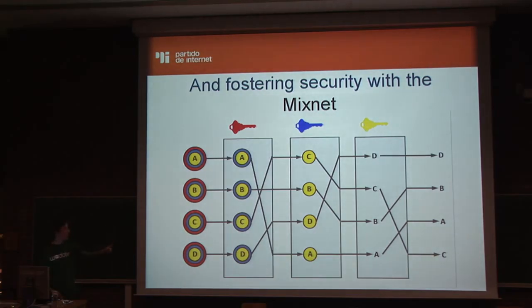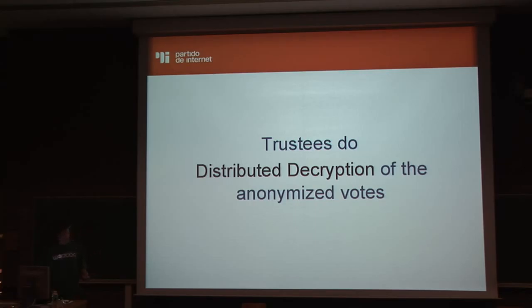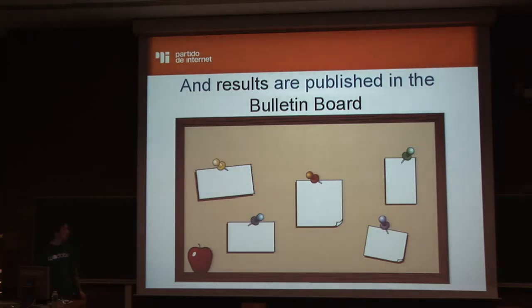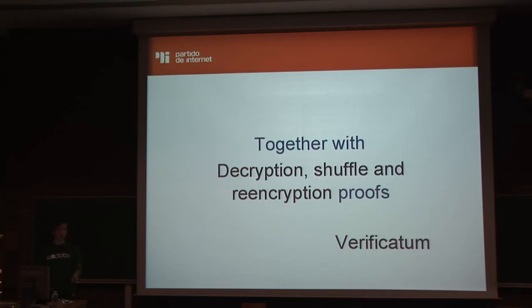Each trustee does this process collaboratively. When we have a list of ballots that are shuffled and re-encrypted, no one will know which is which. Then we decrypt the ballots — done by the trustees performing a distributed decryption of the anonymized ballots. The results are published on the voting board, along with proofs of decryption and proof that the shuffle was correctly done. Even if the voting is corrupt, the mathematics guarantees you will know.